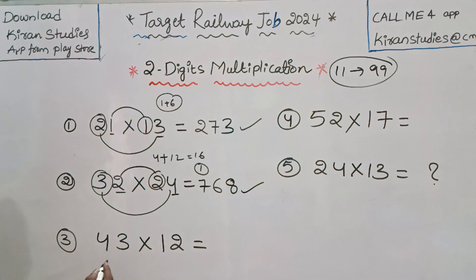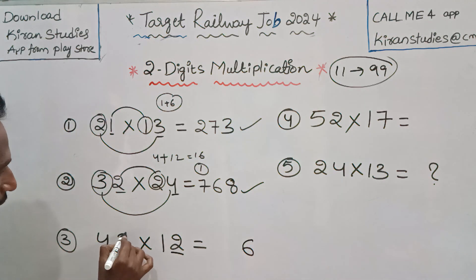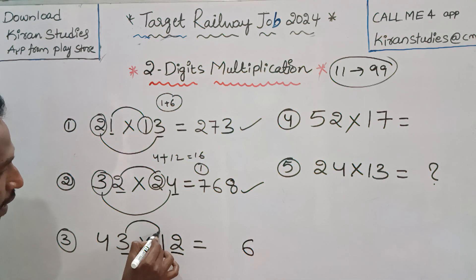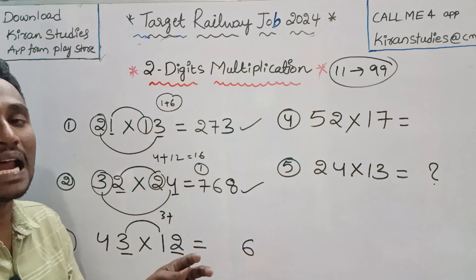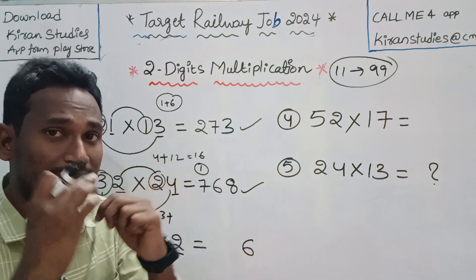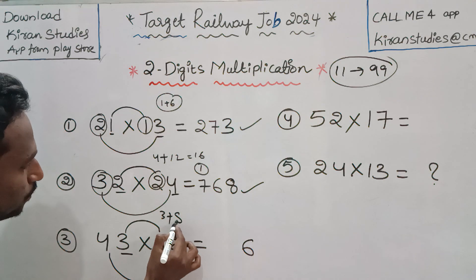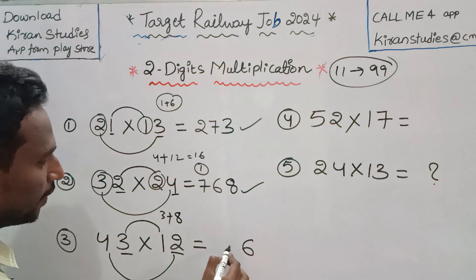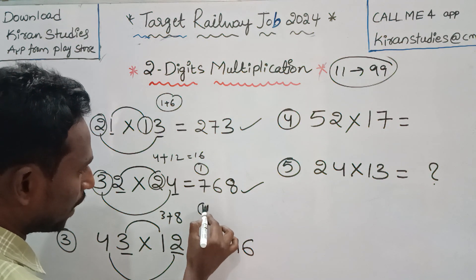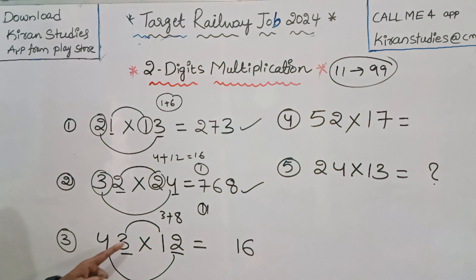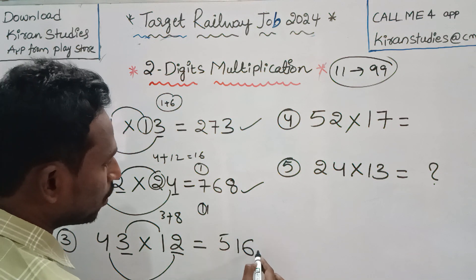That's the next problem. First, the unit digits: 3 times 2 is 6. Next, the middle numbers: 3 times 1 is 3, plus 4 times 2 is 8. So 3 plus 8 is 11. 11 means 1 is the unit digit and 1 is carry forward. Next, 4 times 1 is 4. 4 plus 1 is 5. So the answer is 516.